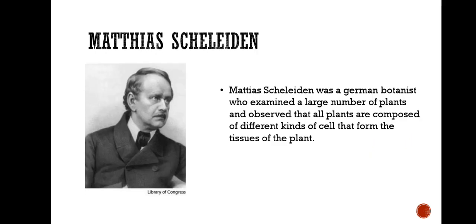Matthias Schleiden was a German botanist who examined a large number of plants and observed that all plants are composed of different kinds of cells that form the tissues of plants. Schleiden was one of the first German biologists to accept Charles Darwin's theory of evolution.